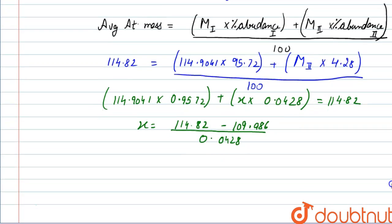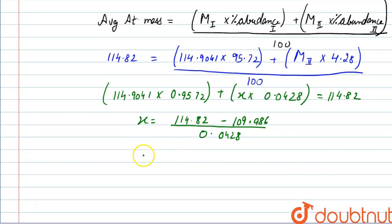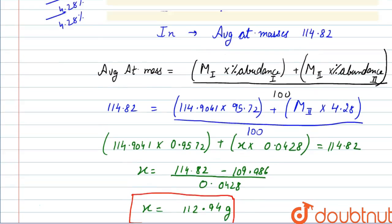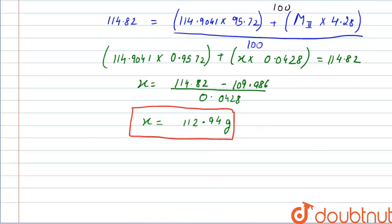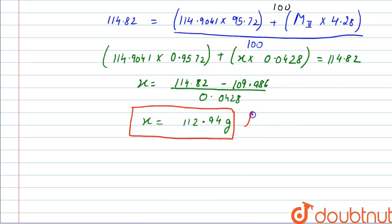So from here, the value of x will be 112.94 grams. This will be the mass of another isotope of Indium. So this will be the answer. Thank you so much.